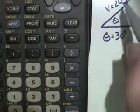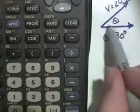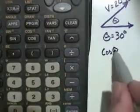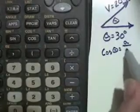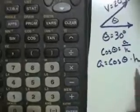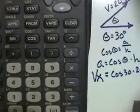Let's assume we have a velocity of 20 meters per second launched at an angle of 30 degrees. What is the horizontal velocity — the velocity traveling along the x-axis? Since cosine of the angle equals adjacent over hypotenuse, the adjacent equals cosine of the angle times the hypotenuse, so the x-axis velocity equals cosine of 30 times 20 meters per second.